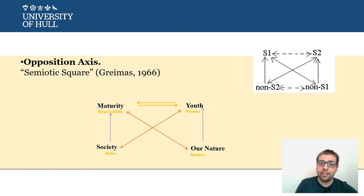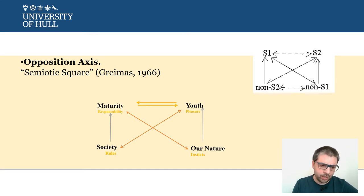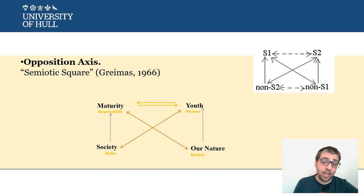These are complex ideas, and this is something you can have different conceptualizations about. But if you think about it in terms of character representation, it would be much easier to understand. In popular narratives, it's very frequent to have characters that represent youth and characters that represent maturity. You have characters that are sometimes enemies precisely because they share different values.